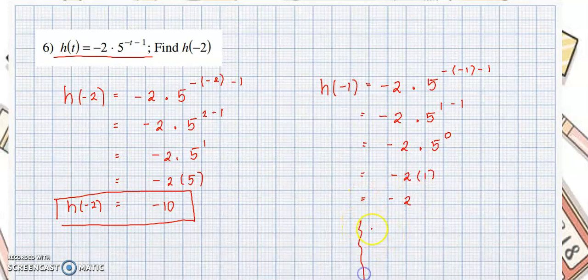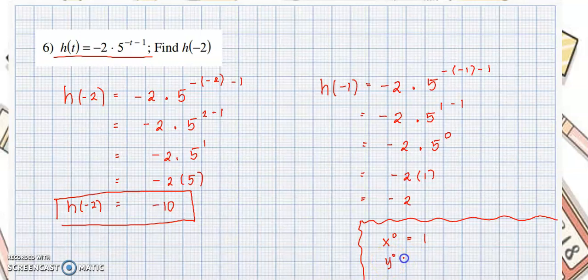To emphasize: x raised to 0 is 1, y raised to 0 is 1, 100 raised to 0 is 1. Any number, any variable raised to 0 is equal to 1.